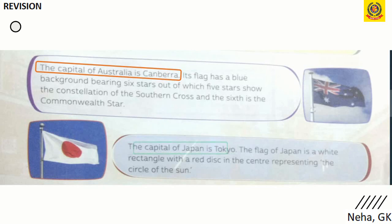The capital of Japan is Tokyo. The flag of Japan is a white rectangle with a red disc in the center representing the circle of the sun. These were the flags of the different nations.